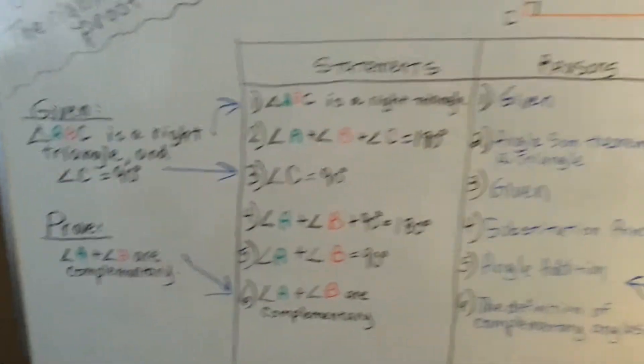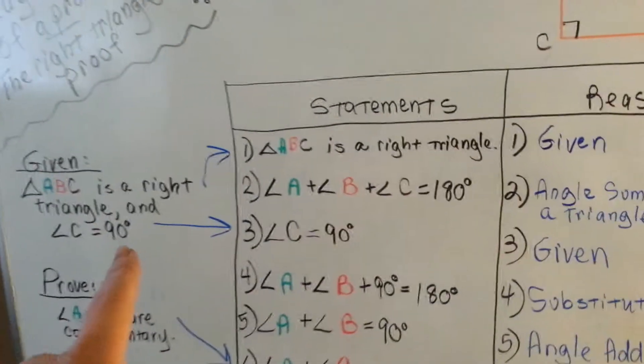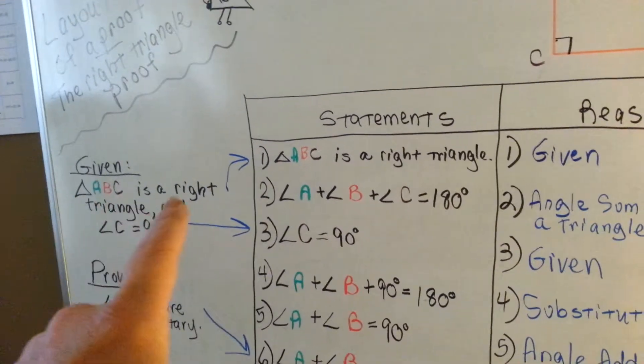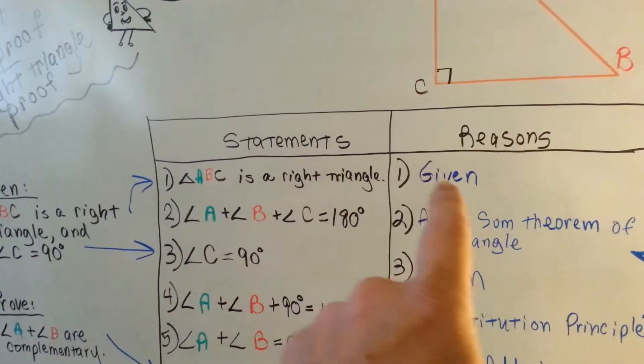And what we're trying to prove is that angle A and angle B are complementary. Okay? So let's get started. The first thing we've got is that triangle ABC is a right triangle. That's given.